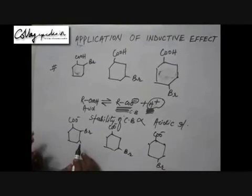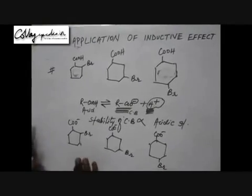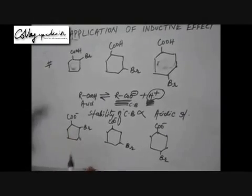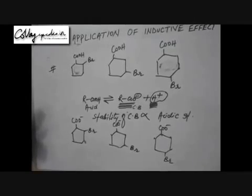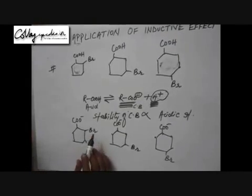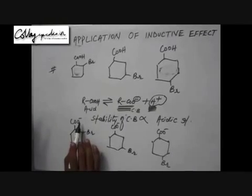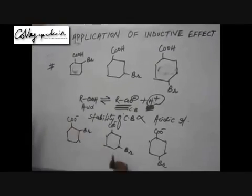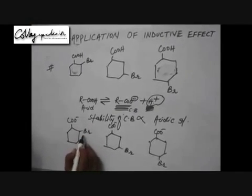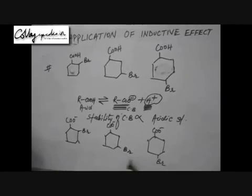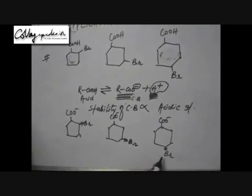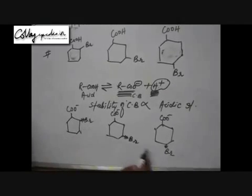To compare the stability of the conjugate bases, the first thing to recognize is that the conjugate bases carry a negative charge. As we said before, stable molecules are neutral. This negative charge will be more stabilized if it is made more neutral, and negative charge can be made more neutral by pulling up the electron density. Bromine is an electronegative atom, so it will pull up the electron density.